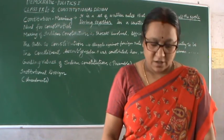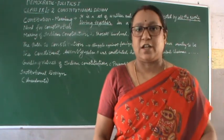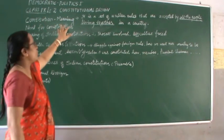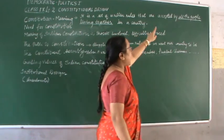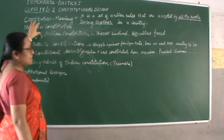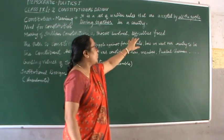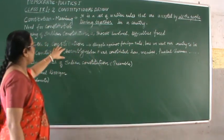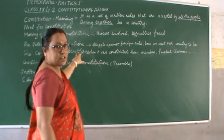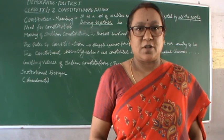Today we will wind up our discussion here, children. In the next class we will be looking into the guiding values of the constitution. To recapitulate what we have learnt: the meaning of constitution, the need for the constitution, how the Indian constitution was made, the process involved, the difficulties faced, the path to the constitution, and the Constituent Assembly. In the next module we will be discussing about the guiding values of the Indian constitution. Thank you, children.